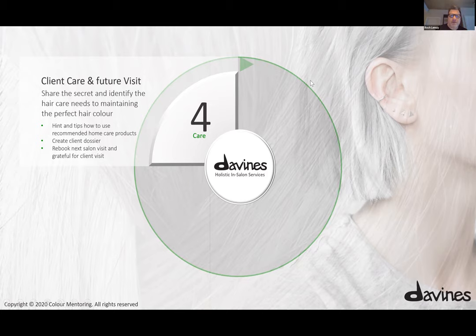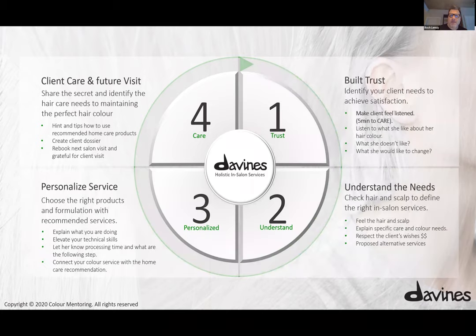So this is the circle of services. Number one: build the trust. Number two: understand the need. Number three: personalize your services. Number four: client's care — making sure her color always looks its best.